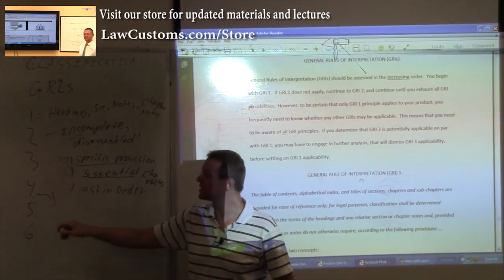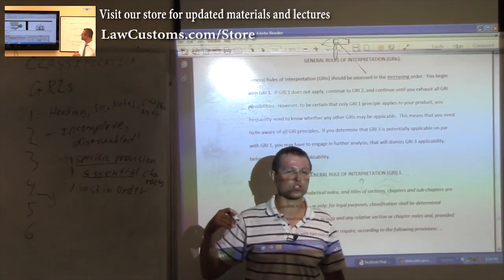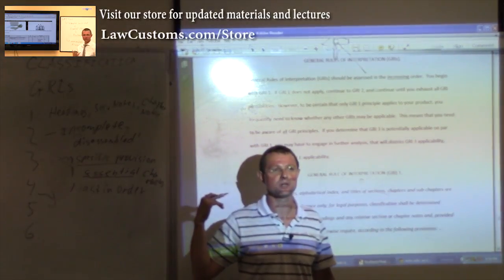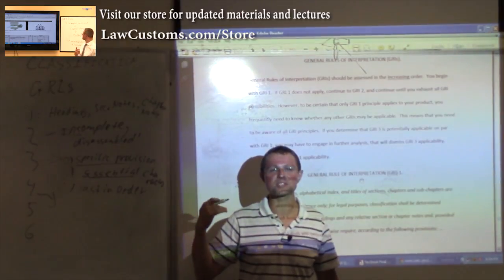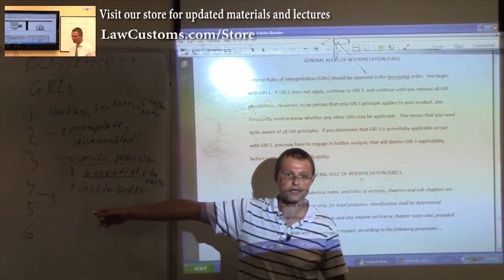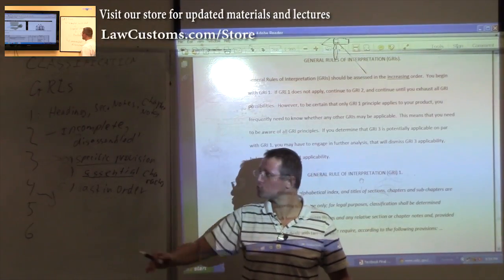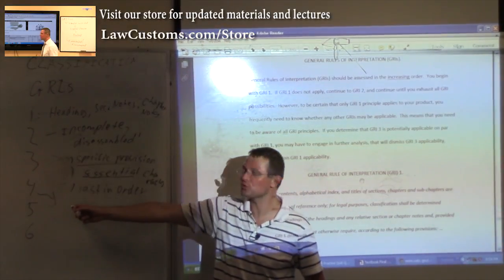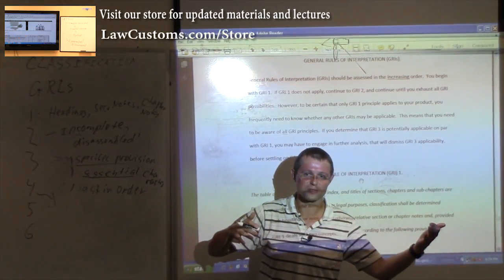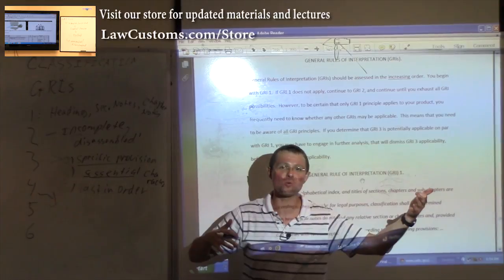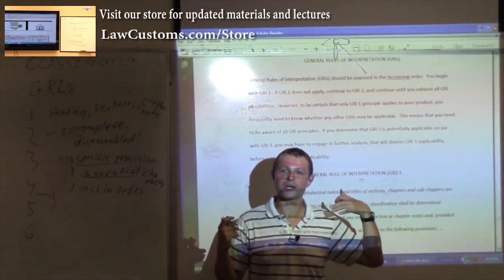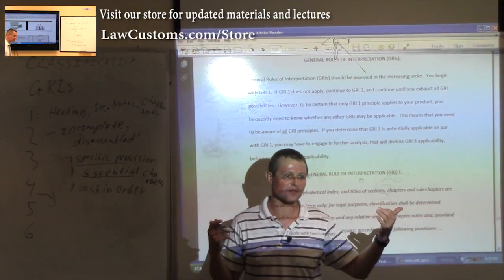Now, GRI 4 is rarely used. Sometimes it is asked to be classified. The way Customs examiners test on this, they just ask word for word, and pretty much what it says: if it cannot be classified according to any of those rules, you classify it akin to those rules. So you kind of go back. There's not much, it's not used much, it's there just in case.